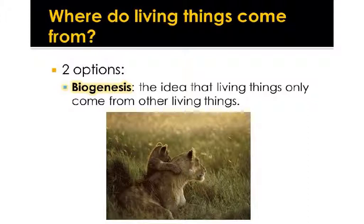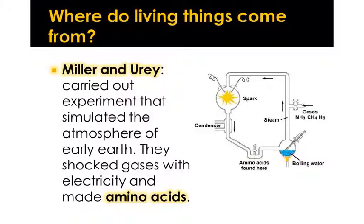The second option for where living things come from is biogenesis — living things coming from other living things, like a baby lion coming from its mother. It's the opposite of abiogenesis. 'Bio' means alive, 'genesis' means comes from, so biogenesis is the idea that living things only come from other living things.